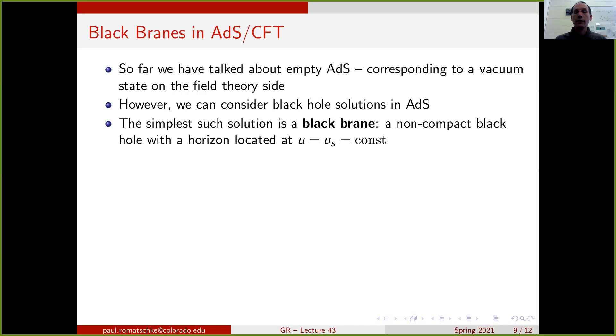Otherwise, there is some clear analogy to our discussion of Schwarzschild black holes. And in particular, we can relate this location of the black brane horizon to the temperature, the Hawking temperature of this black brane. And it's given by a similar relation as the Schwarzschild black hole. So us is just given as 1 over πT, where T is the Hawking temperature of the black brane.